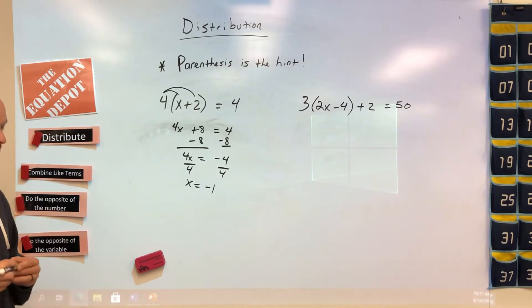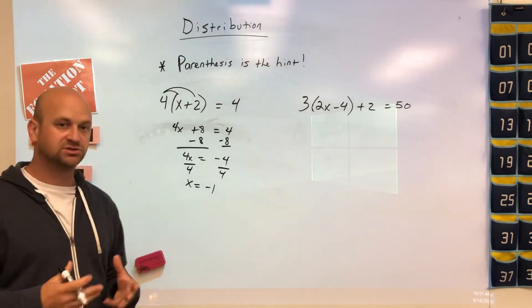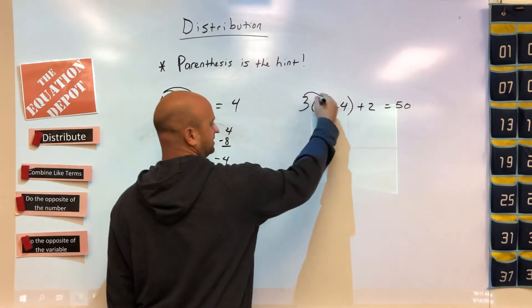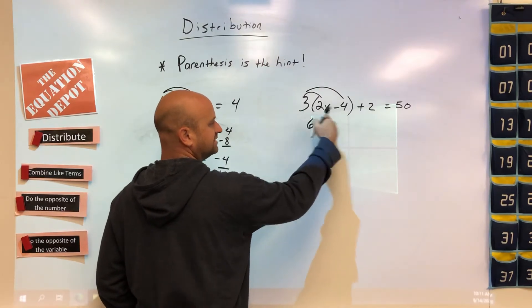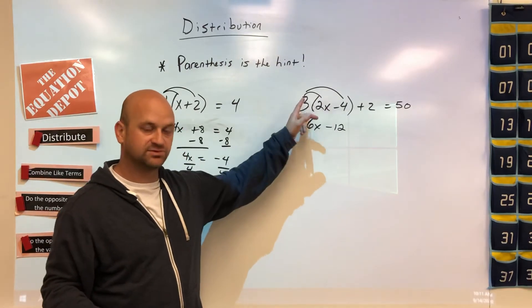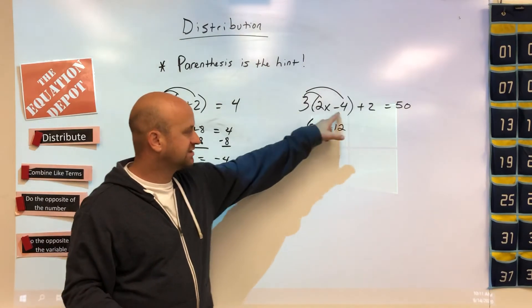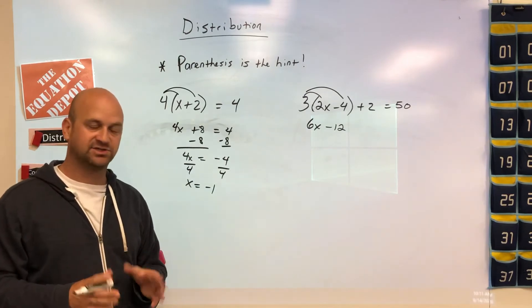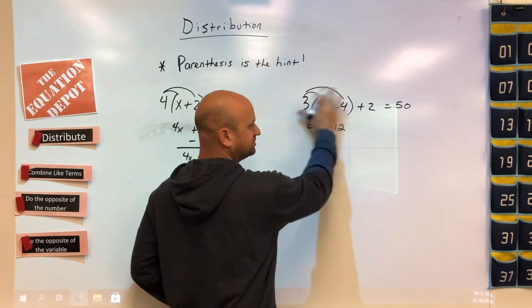Let's look at this next example, which is distribution but it's going to include combining like terms as well. We have parentheses so we need to distribute. Each person that goes to the door gets candy. We have 3 times 2x which is 6x, 3 times negative 4 is negative 12. This negative 4 times 3 is where most people are going to make mistakes. They're going to forget to use their negative multiplication rules. Anytime you have a negative in equations, beware because that's potentially where you're going to make an error.